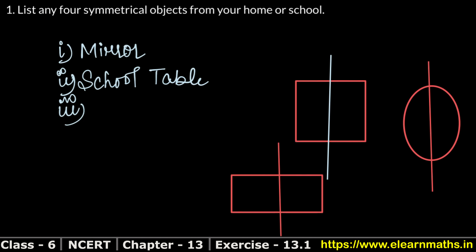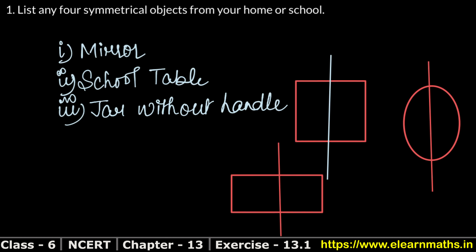Our third example is a jar without a handle. If we cut it with a line of symmetry, both sides will be the same — it is symmetrical. Our fourth example is a pencil. If we have a line of symmetry in the middle of a new pencil, both portions will be identical. You can also write other examples. This is our answer for question 1.